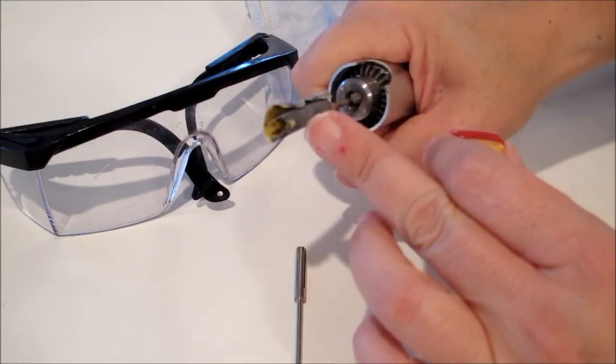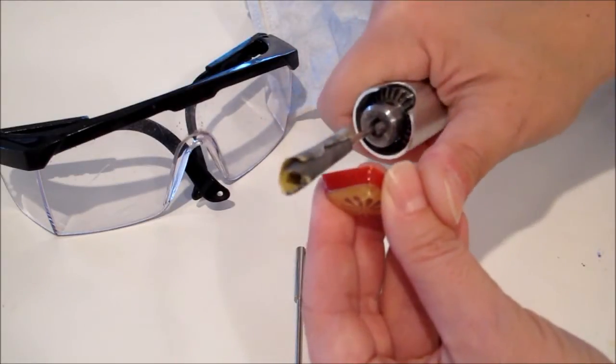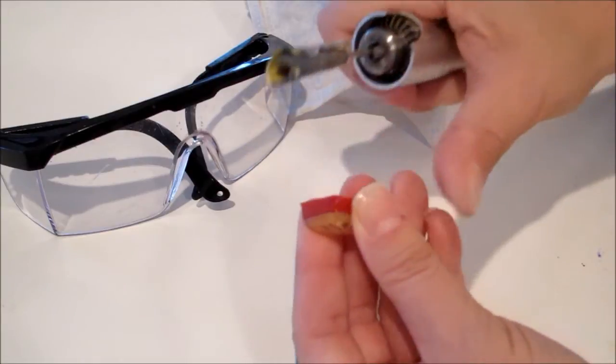So we're using sandpaper on the split mandrel. We're going to go back and forth and we're going to use our thumb as a brace.